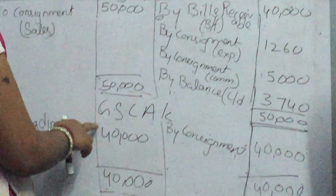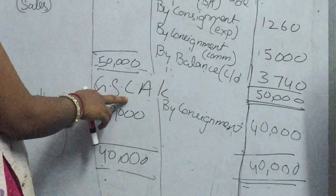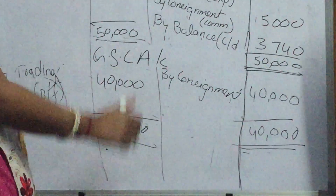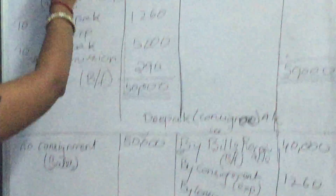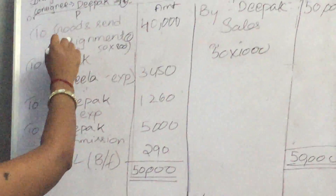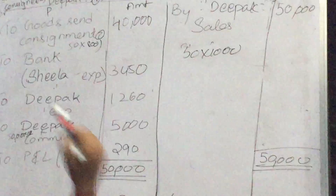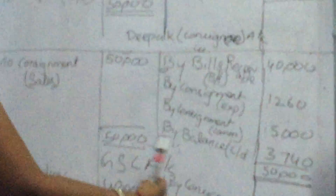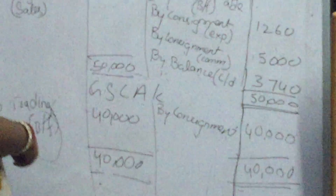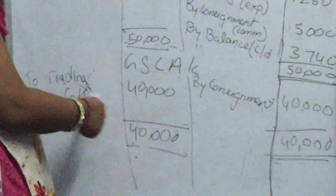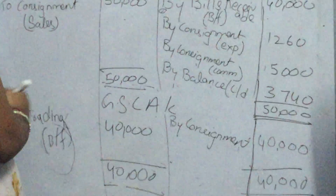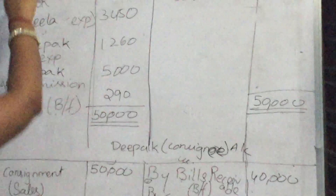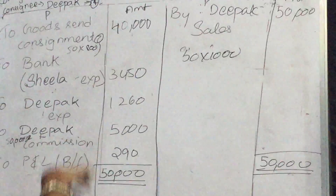Next one is the goods sent on consignment account. Goods sent on consignment — what is the debit side? You should transfer to credit side from the consignment account — 40,000. Same amount is transferred to trading account: 40,000. These are the ledger accounts in the books of Sheila — 3 accounts.